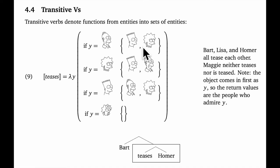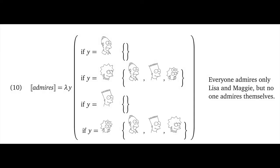As before, I've given meanings for these verbs that seem well aligned with standard Simpsons lore. Bart, Lisa, and Homer all tease each other, and Maggie neither teases nor is teased. For admirers, everyone admires Lisa and Maggie, but no one admires themselves. And so forth.